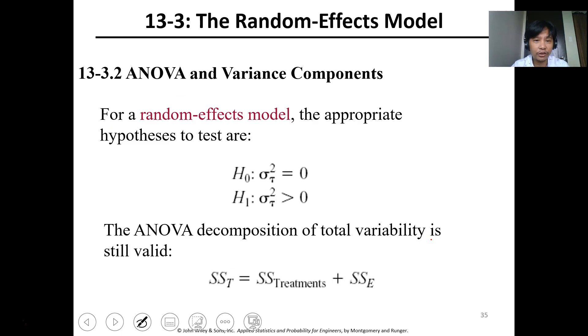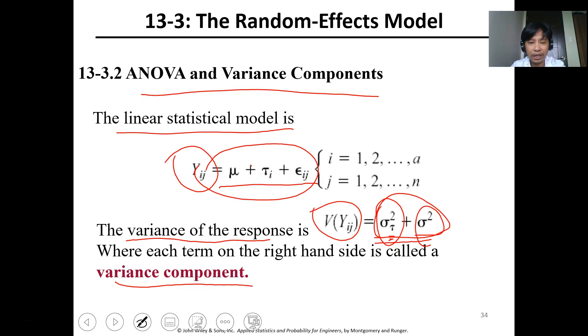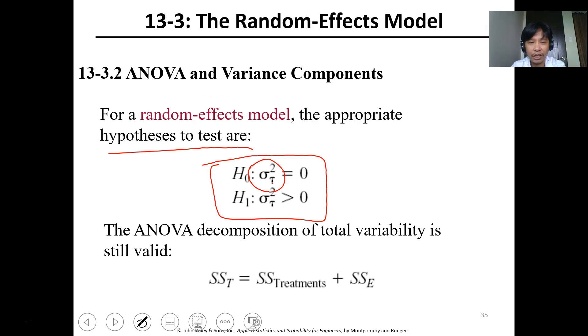Now, how to test the random effects model? In hypothesis testing, the null hypothesis is that the value is equal to zero, and tau squared for the specific parameter variance, while this one is the variance is not equal to zero or greater than zero. We use the SST, SS treatment, and SSE in the calculation.